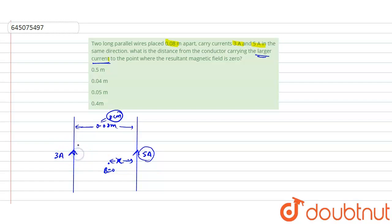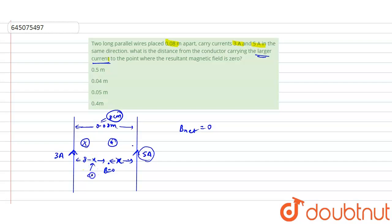Due to the 3 ampere wire, there is a magnetic field directed into the plane. There is also a magnetic field due to the 5 ampere wire directed out of the plane. At a certain point, these two magnetic fields will cancel each other and the net magnetic field will be equal to zero. Let us call the first wire the 3 ampere wire and the second wire the 5 ampere wire, with B1 and B2 as their respective magnetic fields.